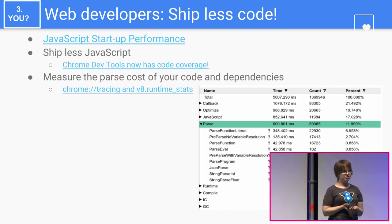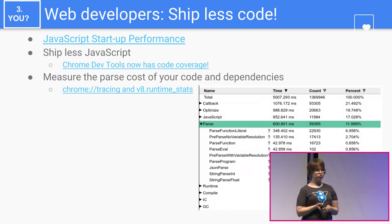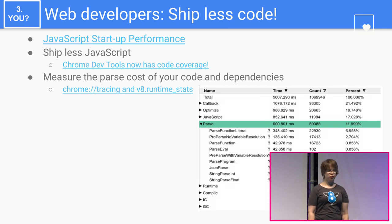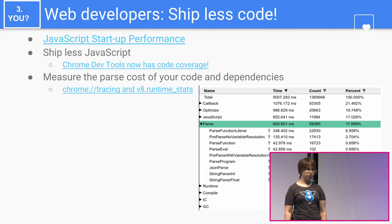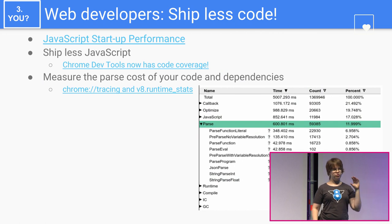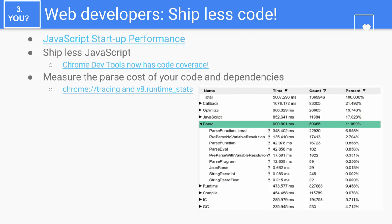You can use the code coverage functionality in DevTools to see what parts of your code are not needed or not needed on startup, so maybe it's possible to lazy load some of that code. You can also measure the parse cost of your code and dependencies with Chrome tracing and the V8 runtime stats — here you can see the concrete number of milliseconds that V8 spends parsing your code.